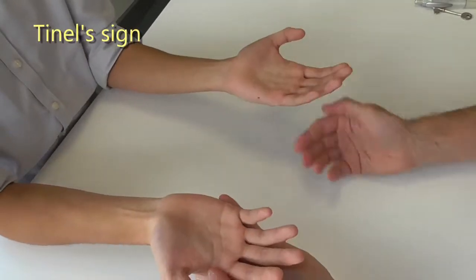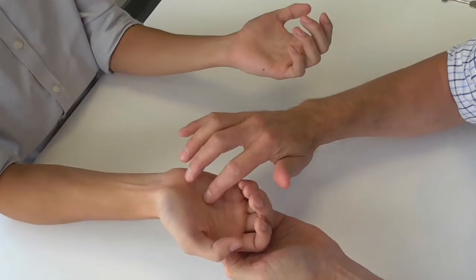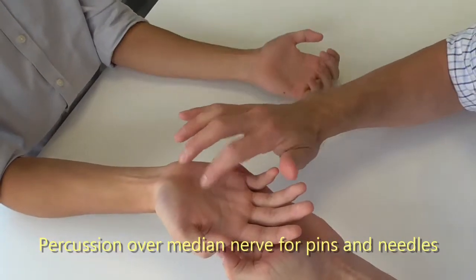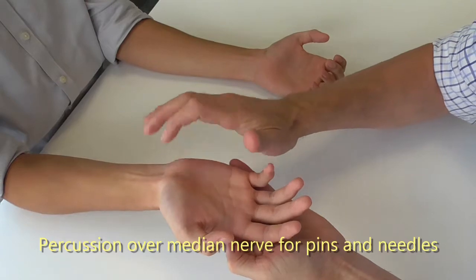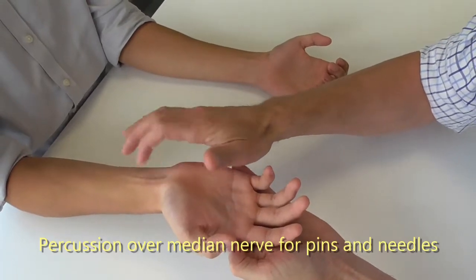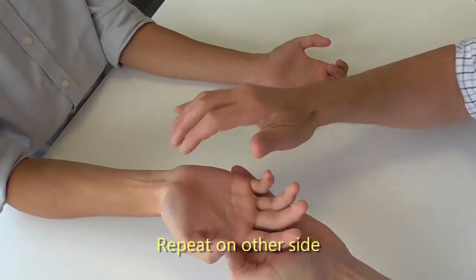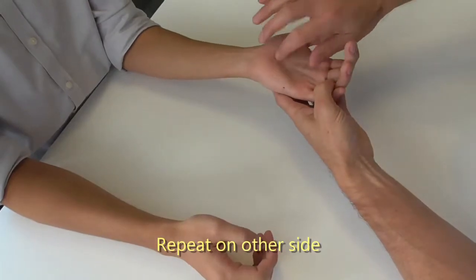And then finally, the Tinel test, which is I'm going to just palpate, and I'm going to percuss your nerves. So start distally, and I move towards the proximal side, just tapping the nerve, and there's no pins and needles going down into the fingers. No pins and needles. I'm just going to do the same for that.